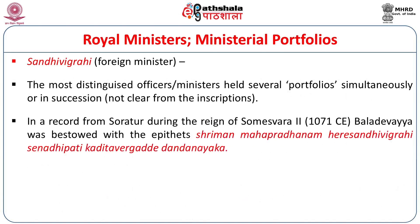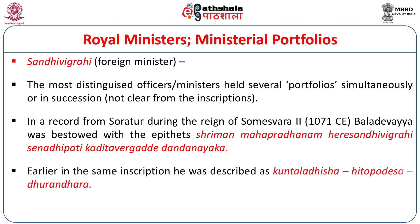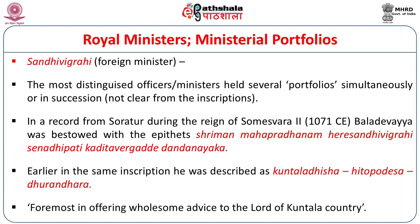The most distinguished officers and ministers generally held several portfolios simultaneously. In a record from Sorattur during the reign of Someshwara II, dated 1071, Baladevaya was bestowed with the epithets: Sriman Mahapradhanam (chief minister), Heri Sandhi Vigrahi (senior foreign minister), Senadhipati (commander), Kaditavirgadde, and Dandanayaka. In the same inscription, he is also described as Kuntaladhesha Shitopadesha Dhurandhara — foremost in offering wholesome advice to the lord of the Kuntala country.